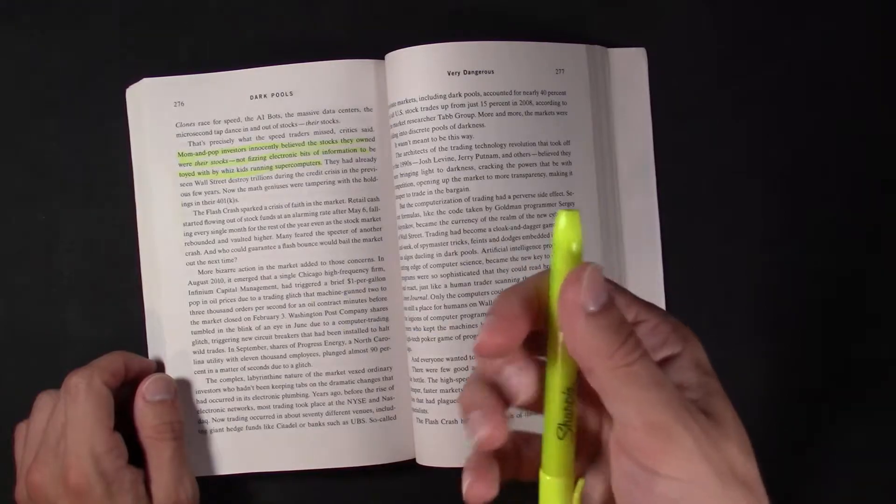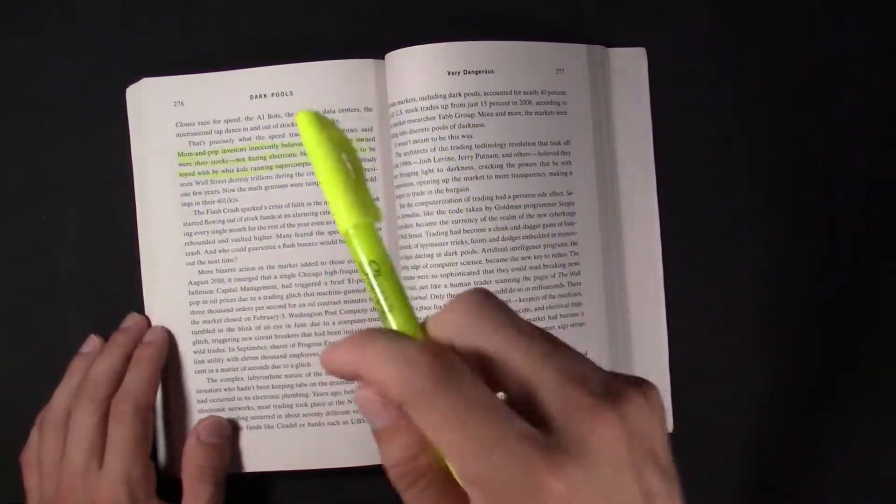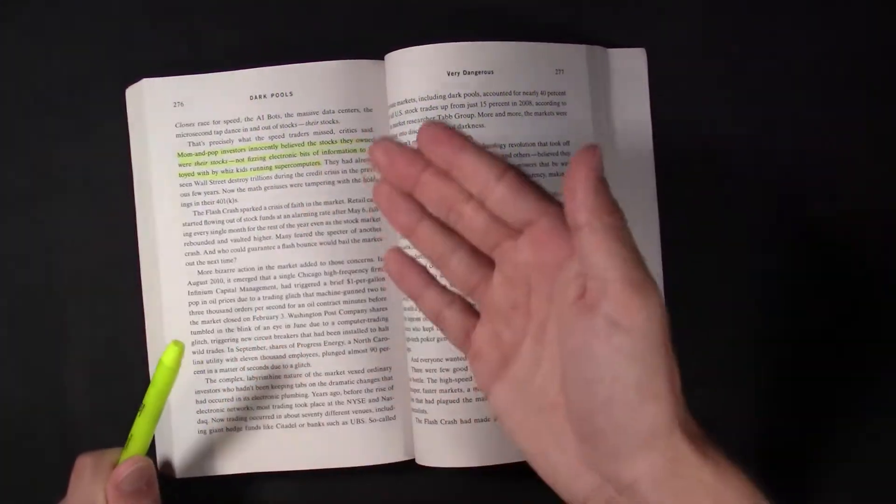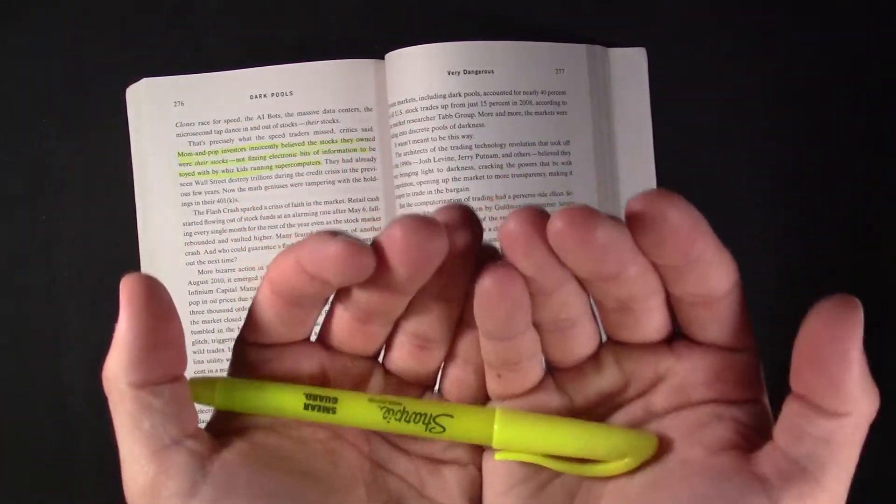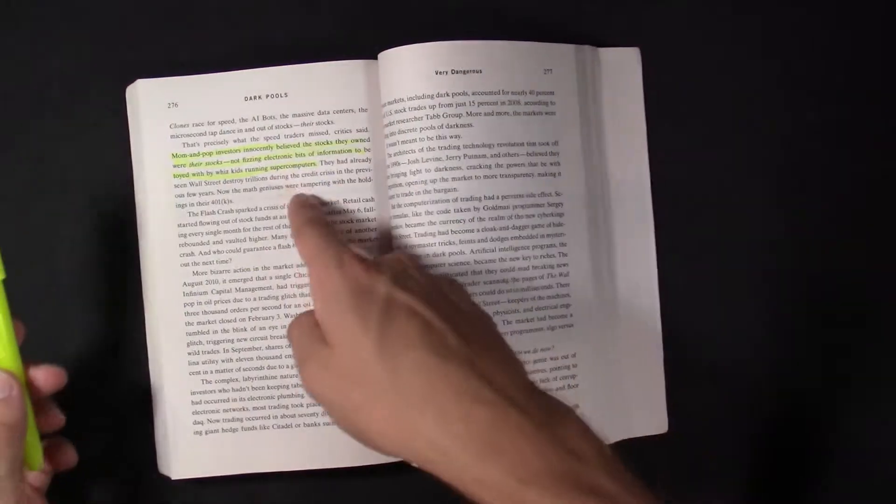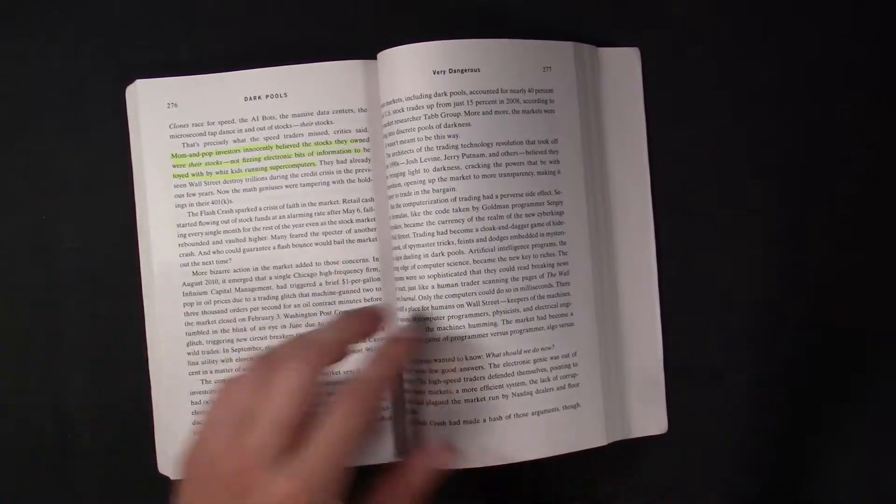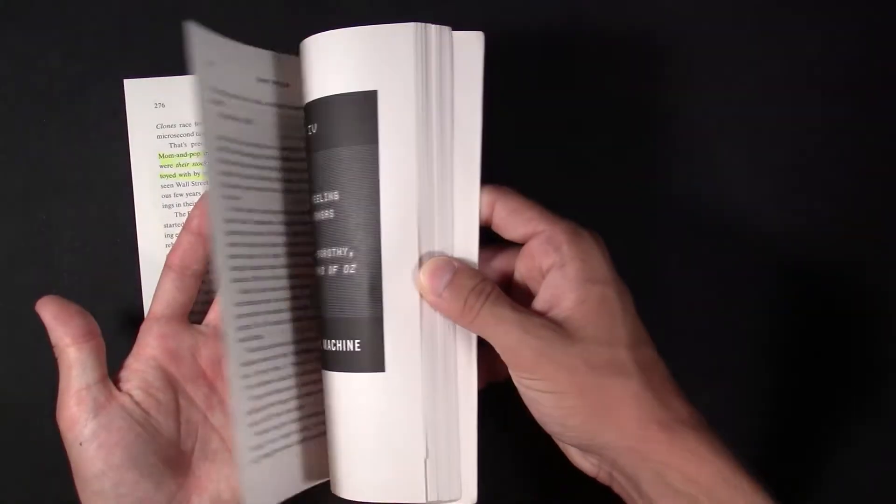But do I really own, what do I own, that number on the screen? I own this, I just don't have this thing in it. Like, I own this highlighter. I have it. It's not some electronic bit of information in the ether. I guess that's what I'm saying.